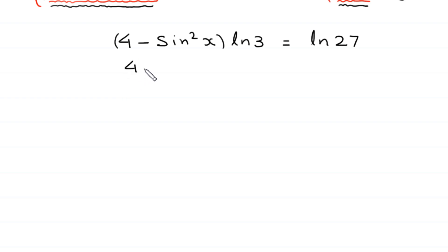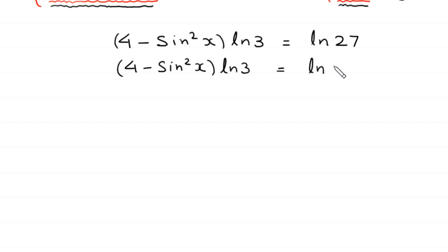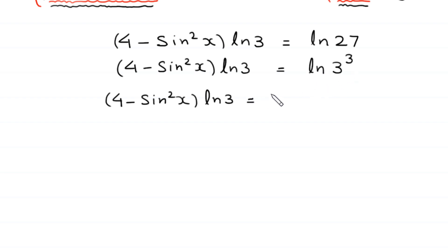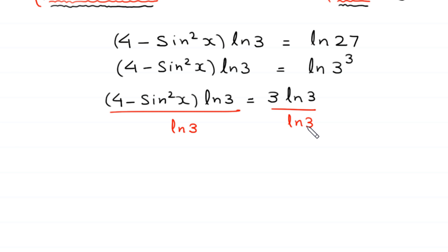So we have (4 − sin²x)·ln 3 = ln 27. We write ln 27 as ln(3³) = 3·ln 3. Dividing both sides by ln 3 — cancelling ln 3 on both sides — we are left with 4 − sin²x = 3.